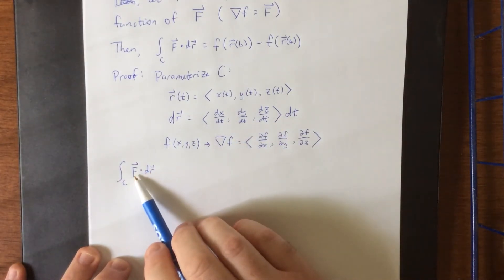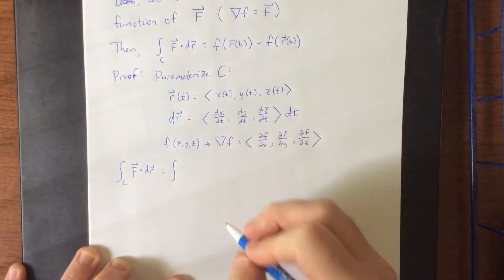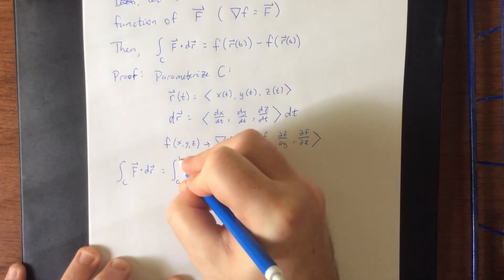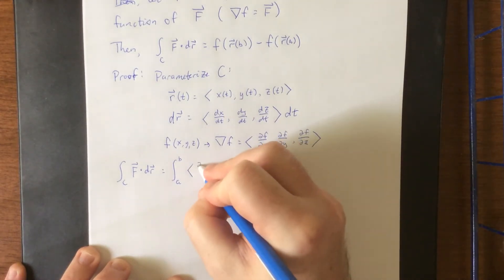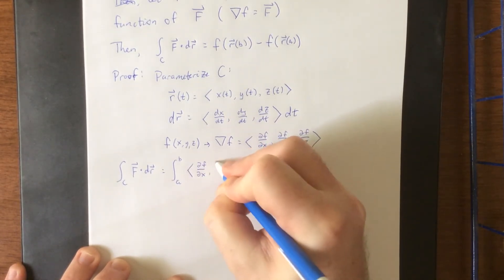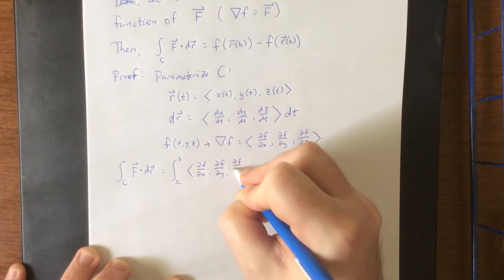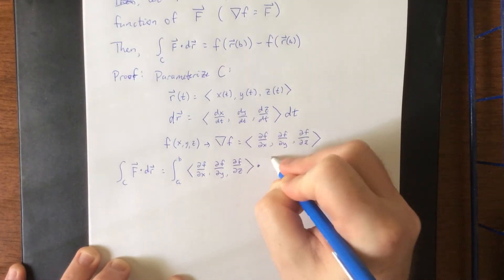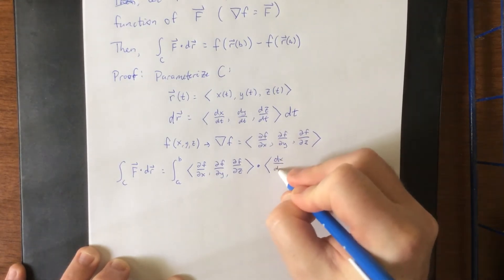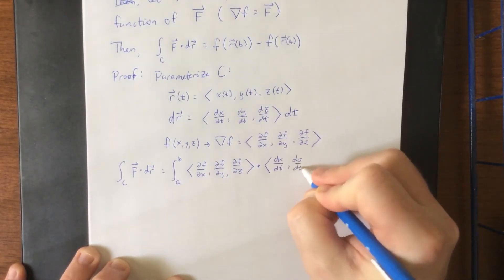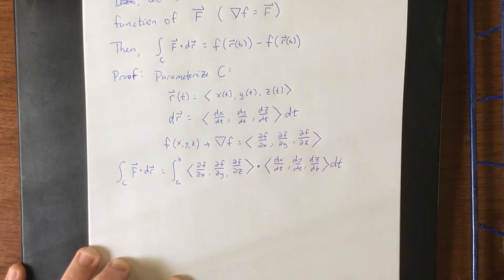Now, do keep in mind that capital F is the gradient of F in this case. So plugging in our parameterization with respect to T, we can now allow this to go from A to B, since everything will be parameterized with respect to T. So capital F is now partial derivative of F with respect to X, partial derivative of F with respect to Y, and partial derivative of F with respect to Z, dotted with DR, which is what we had back here. That'll be DXDT, DYDT, and DZDT, all times DT.